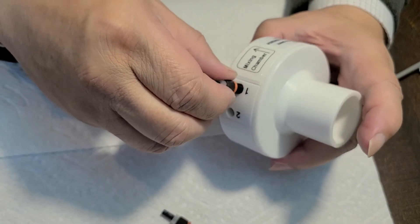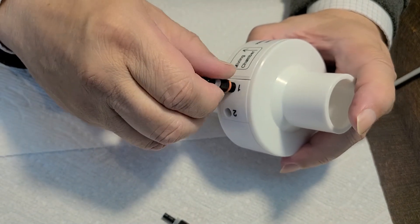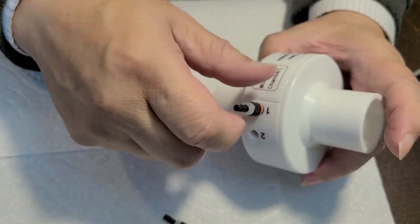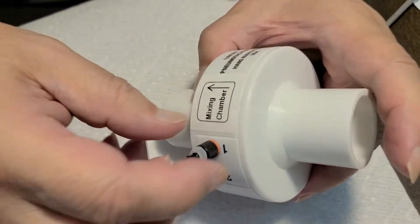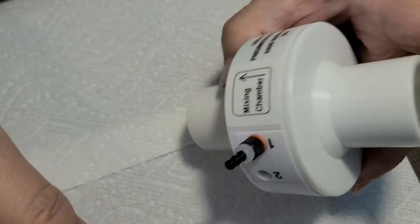So first gently screw in until the orange o-ring hits the surface. Then turn 90 degrees.